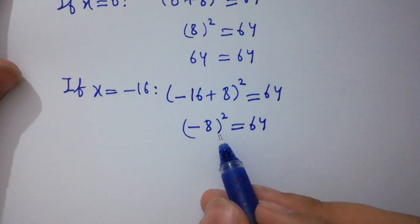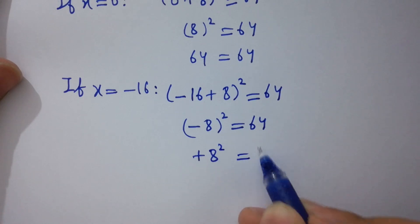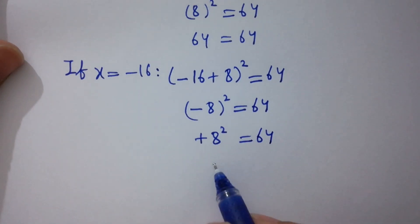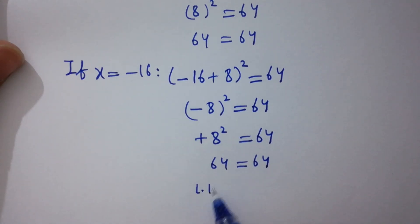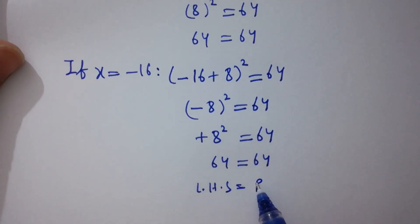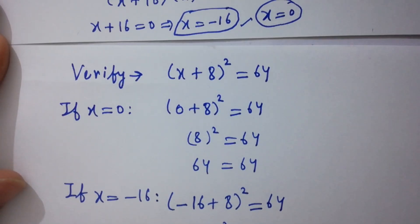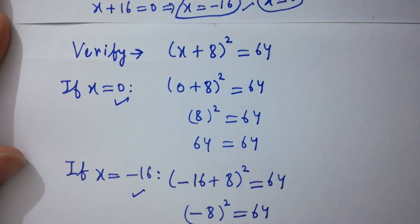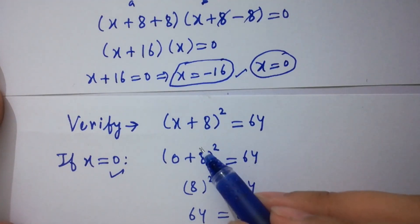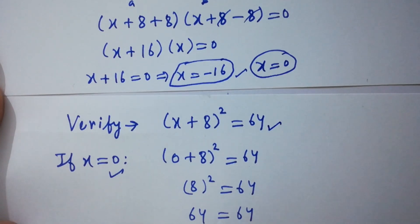Since the exponent 2 is even, minus times minus gives plus. We have plus 8 square equal to 64, and 8 times 8 equals 64. Left hand side equals right hand side, which shows that the values x equals 0 and x equals minus 16 both satisfy the equation (x + 8) whole square equal to 64.